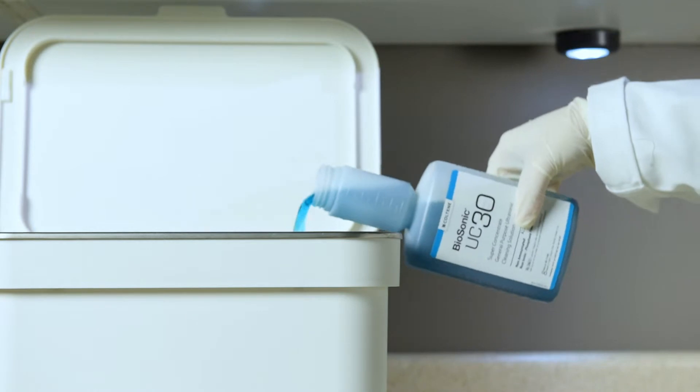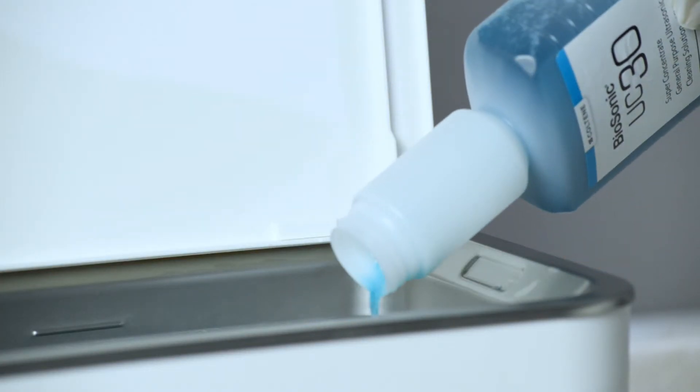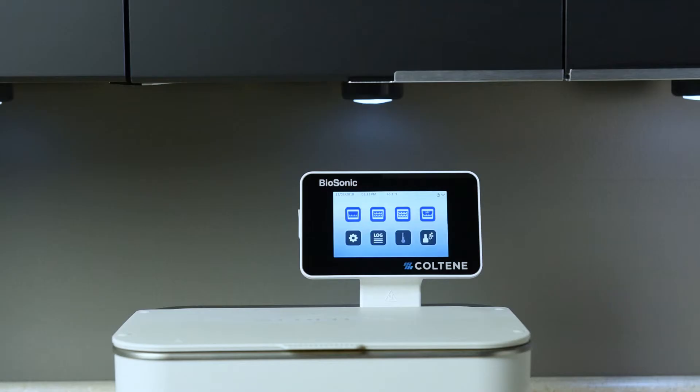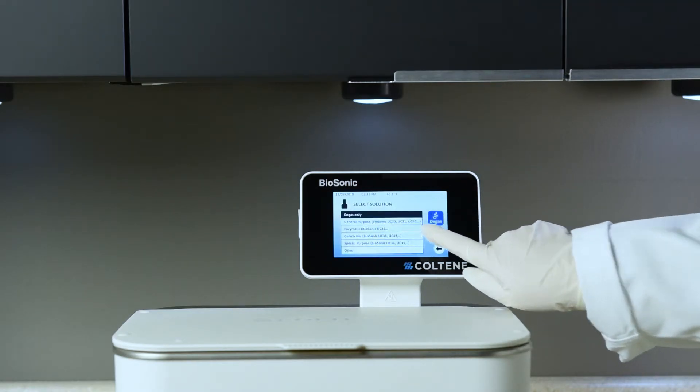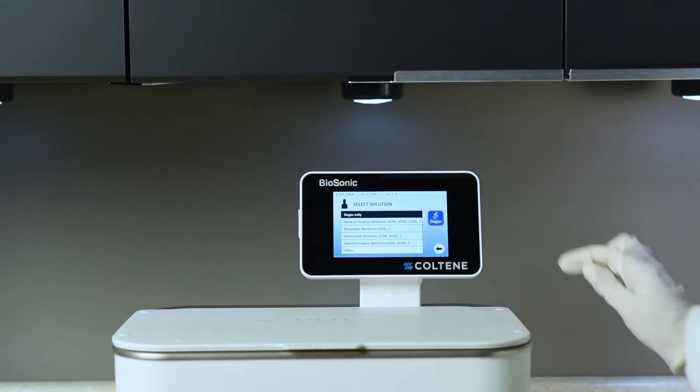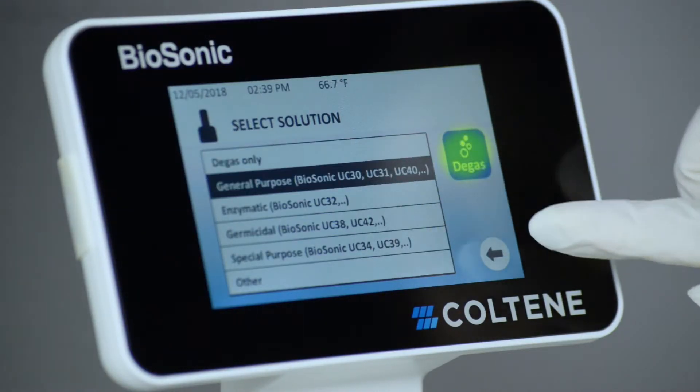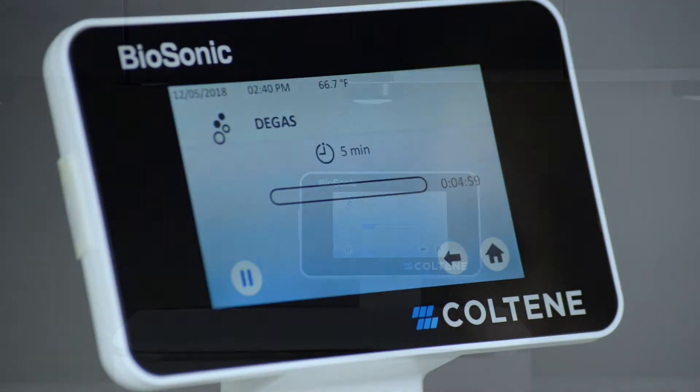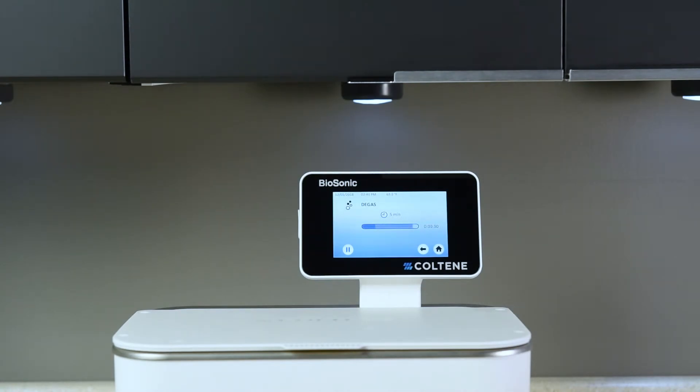Degassing is necessary each time a new solution is added to the tank. Your biosonic unit is equipped with a degas cycle that prepares your solution for use. Simply press the degas icon on the main screen, select solution type and press the degas icon to start the degassing process. The timer will count down from 5 minutes.